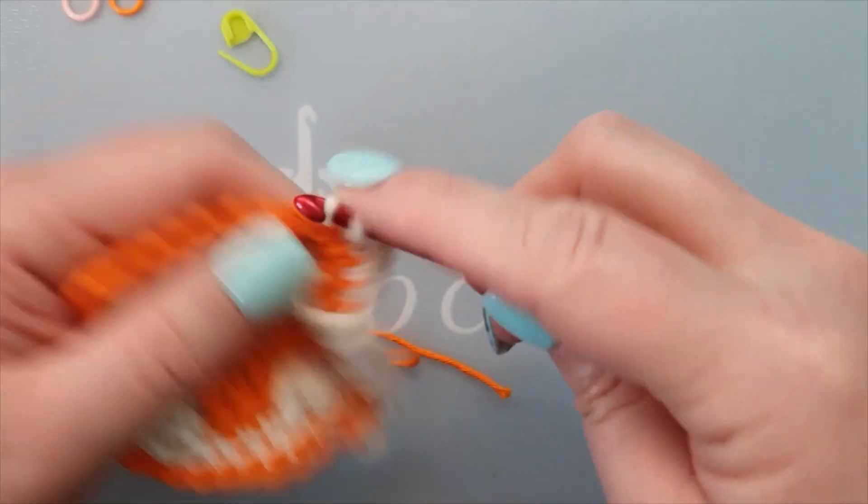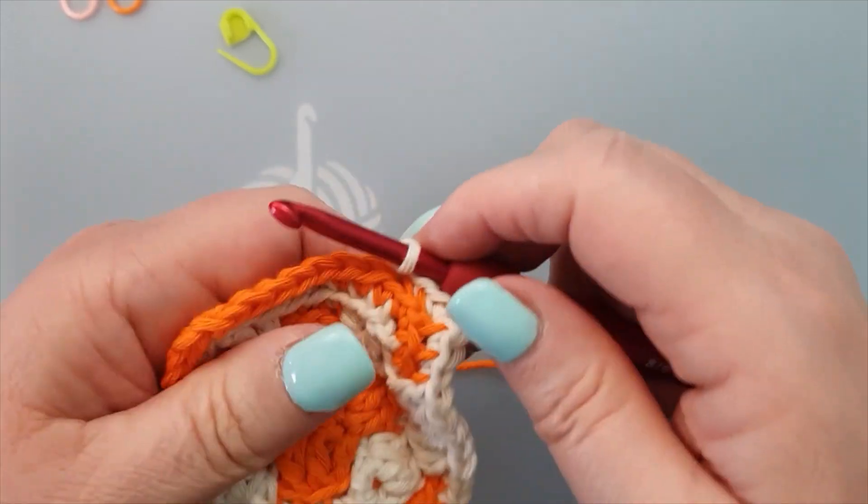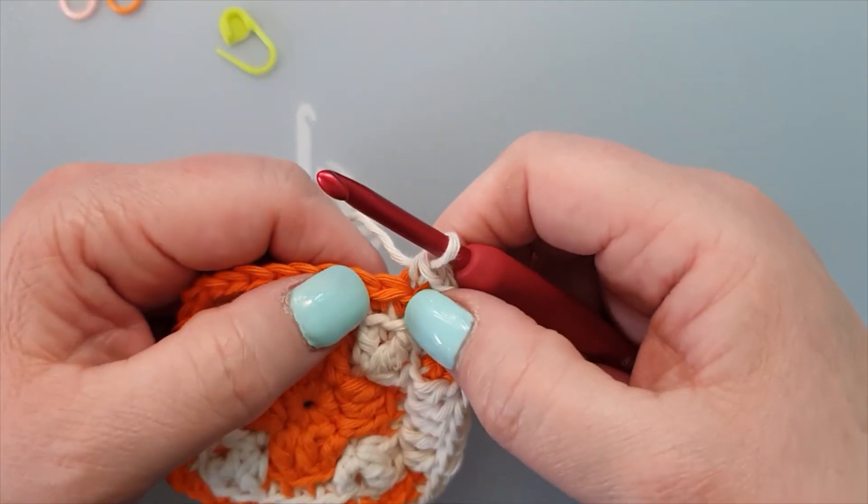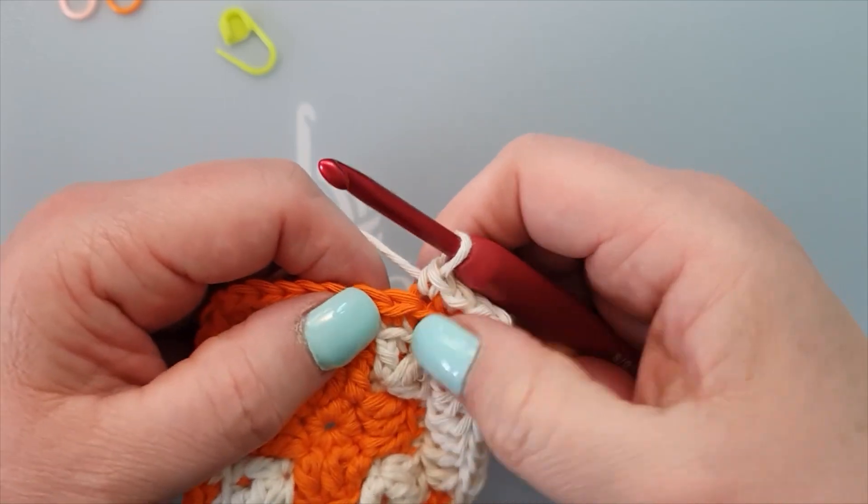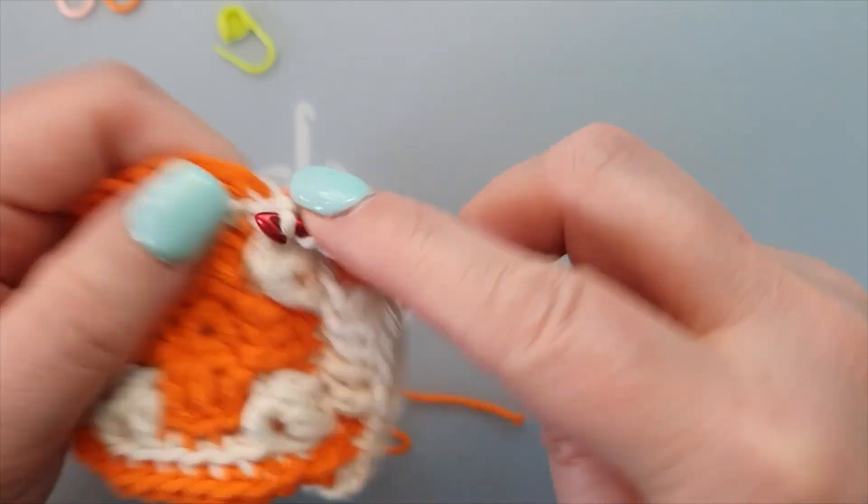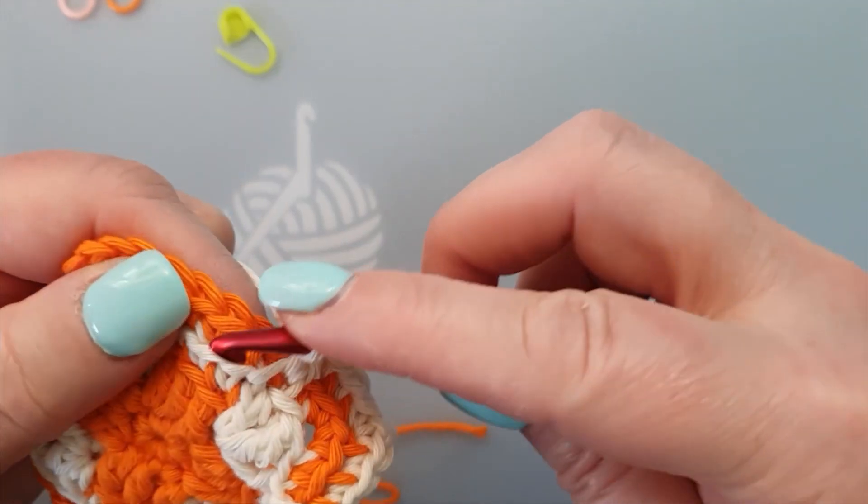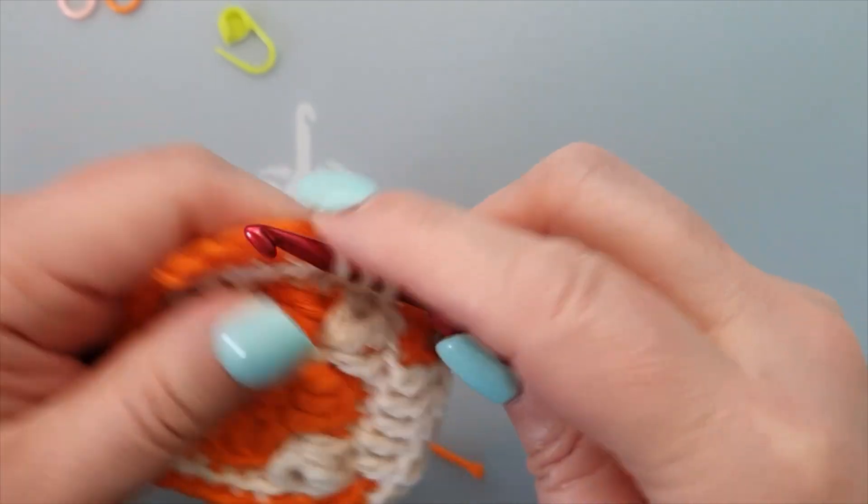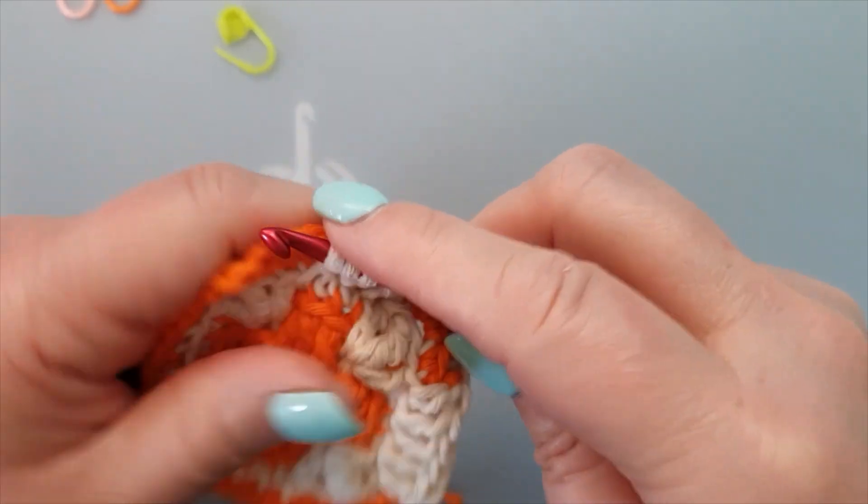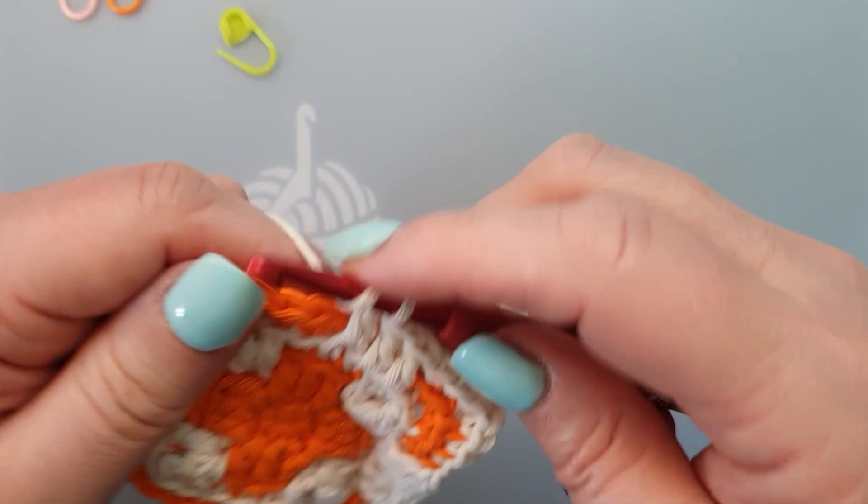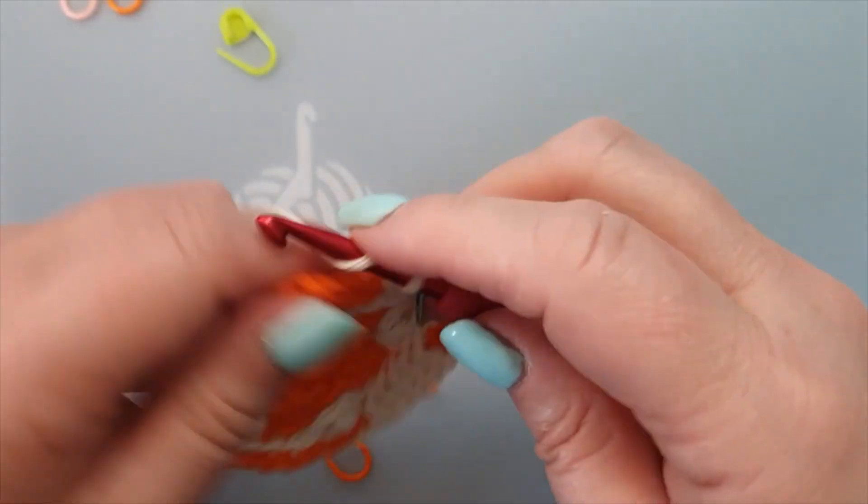Two singles. Five doubles and we're going to find our first double crochet here. See that's this one double crochet there. Five doubles one, two, three, four, five.